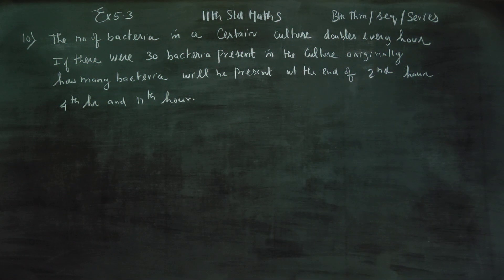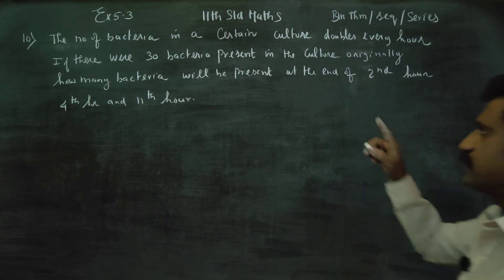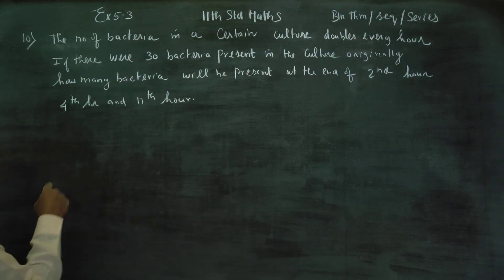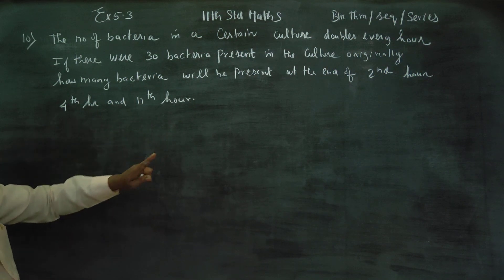Dear 11th standard students, in Exercise number 5.3, sum number 10: The number of bacteria in a certain culture doubles every hour. If there were 30 bacteria present in the culture originally, how many bacteria would be present at the end of the second hour, fourth hour, and the nth hour?